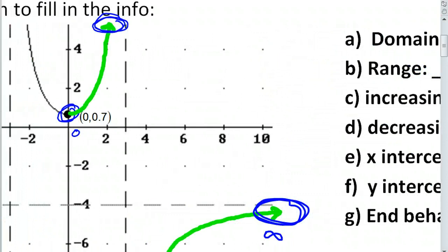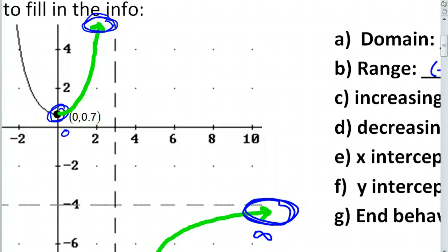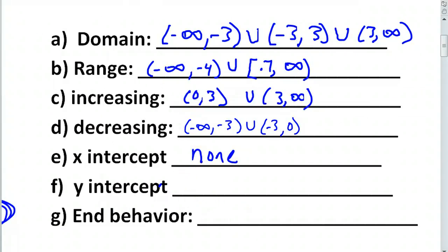All right. Is there a y-intercept? Yeah. Yeah. All right. The y-intercept is right here. All right. Zero comma 0.7. And this dot right here is the y-intercept. Okay. So, zero comma 0.7.